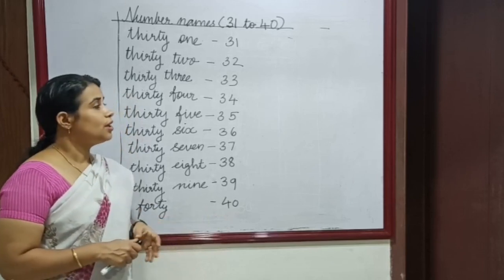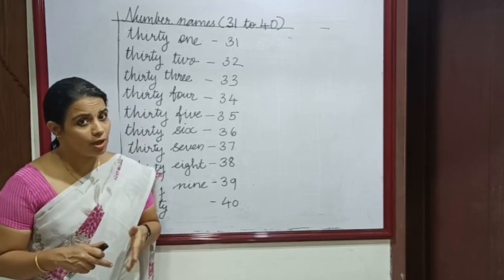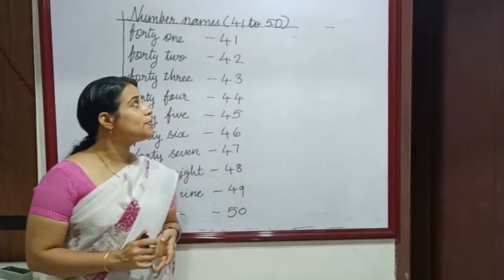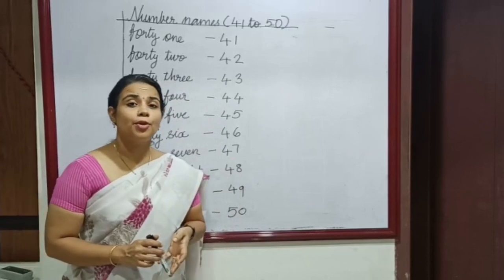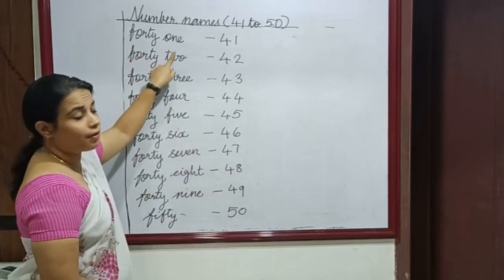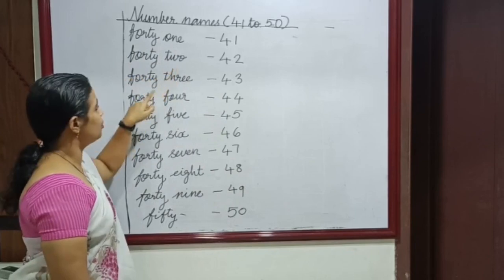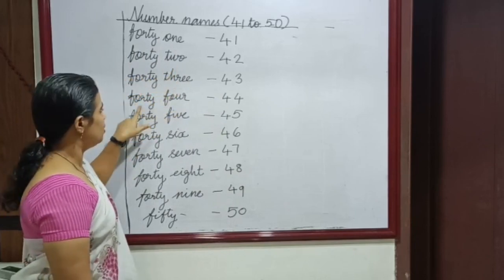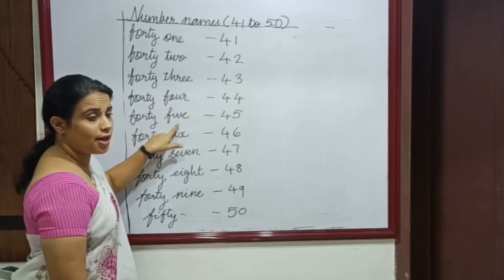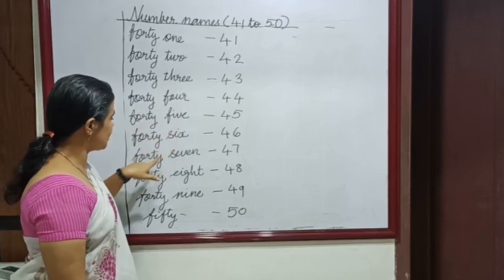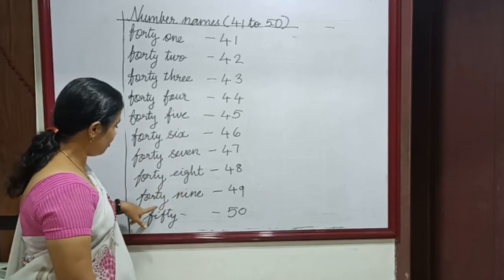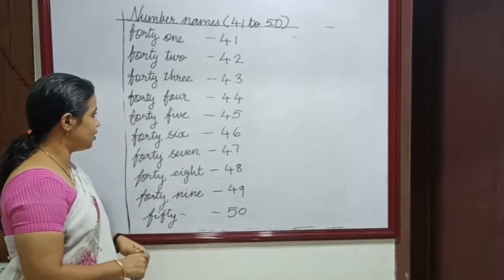Do one thing — you are supposed to write the number names in your notebook. Here the number names from 41 to 50. 41, 42, 43, 44, 45, 46, 47, 48, 49, 50.